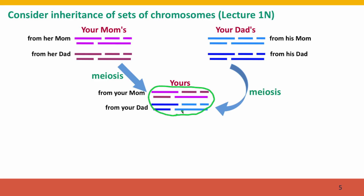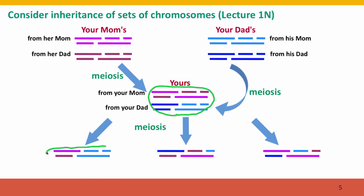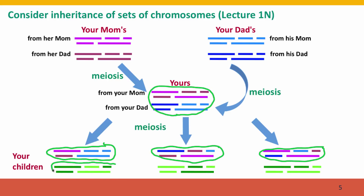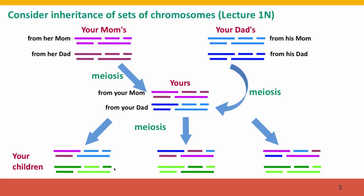Now there's the diploid cell that's going to become you. When you eventually undergo meiosis — when your germline cells undergo meiosis — again a new combination of these chromosomes is created so that each of your gametes, your eggs or your sperm, gets a new different combination of the chromosomes that you got from both parents. Still a complete set, but a different combination. And when you have children, your partner will bring in new combinations of their sets as well. Now meiosis doesn't only make new combinations of sets of chromosomes; it makes new combinations of the sequences within chromosomes as well.